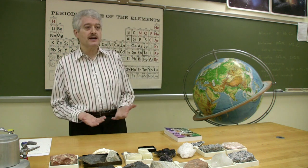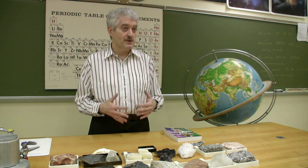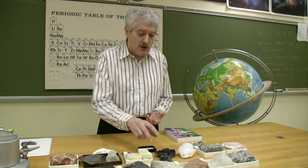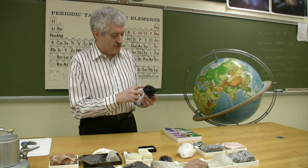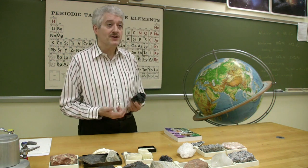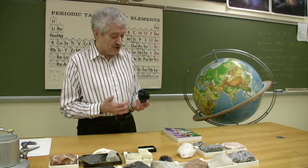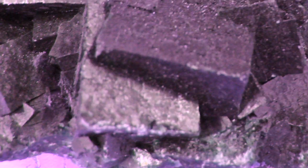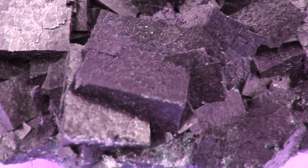As we look at minerals, there are basically seven tests that we do. One of the things we look at is color. Some minerals have distinctive colors that, almost as soon as you see it, you can tell what you have. Others are more subtle. For example, fluorite occurs in a wide range of colors — this one happens to be purple.